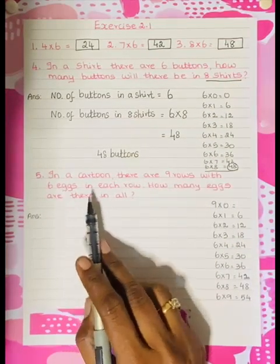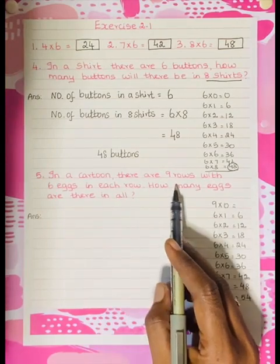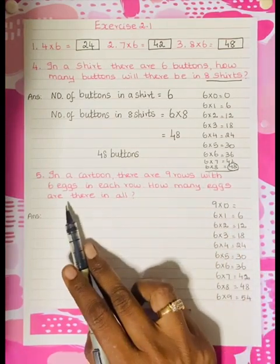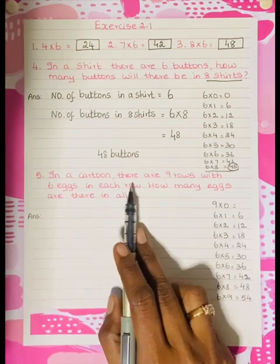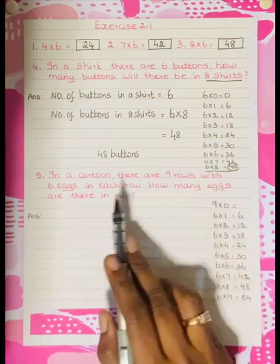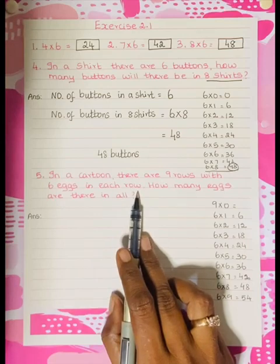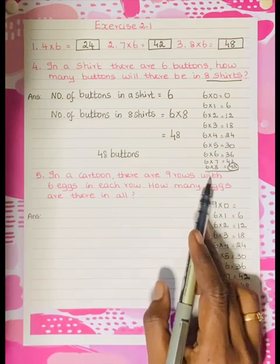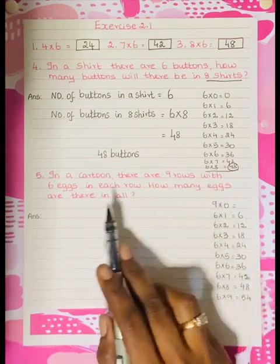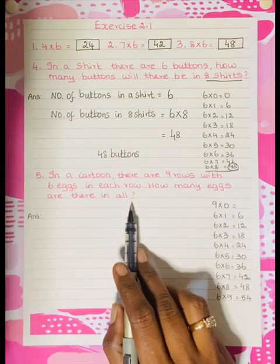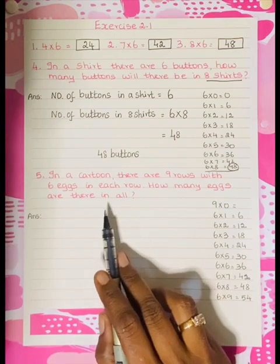Is it clear? When you have an imagination, the statement problems will be easy, very easy. Next one: in a cartoon there are 9 rows with 6 eggs in each row.